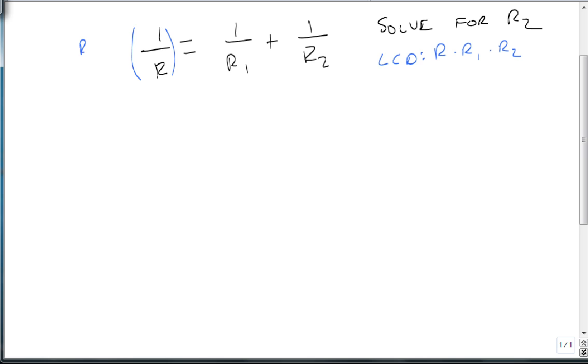We then multiply both sides by r times r1 times r2, which we'll distribute. And notice that this is going to clear one of the denominators with one of the numerators each time.